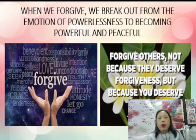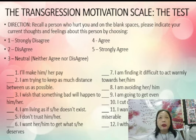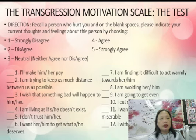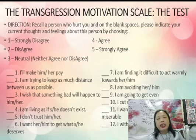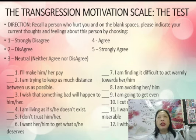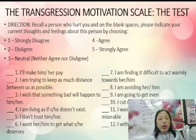The direction is as follows: Recall a person who hurt you. On the blank spaces, please indicate your current thoughts and feelings about this person by choosing: number 1 if you strongly disagree, number 2 if you disagree, number 3 if you are neutral — you neither agree nor disagree, number 4 if you agree, and number 5 if you strongly agree, in the following sentences.